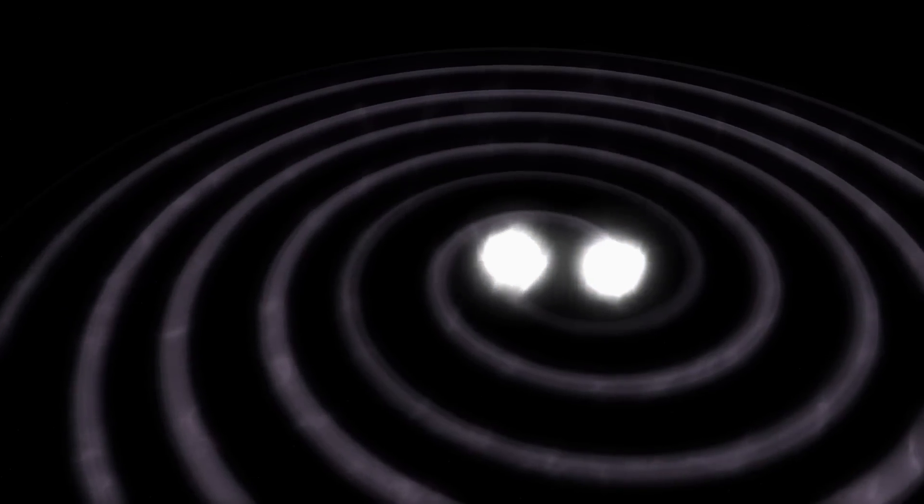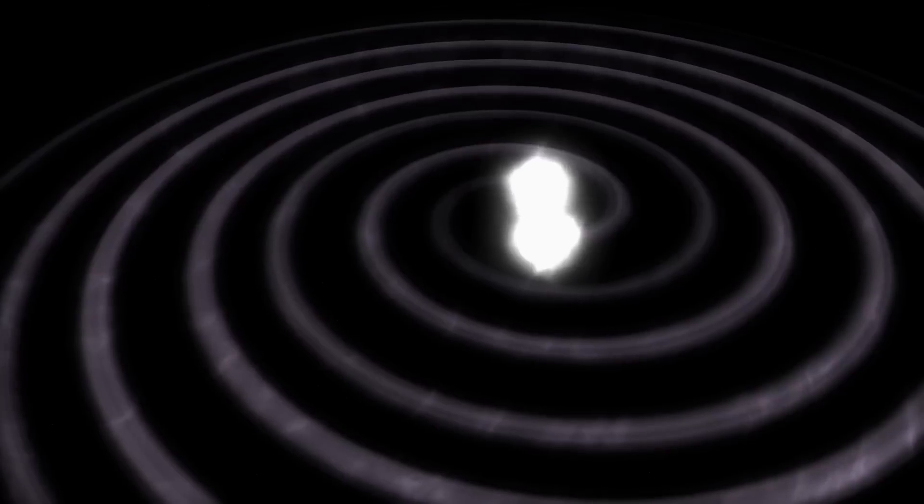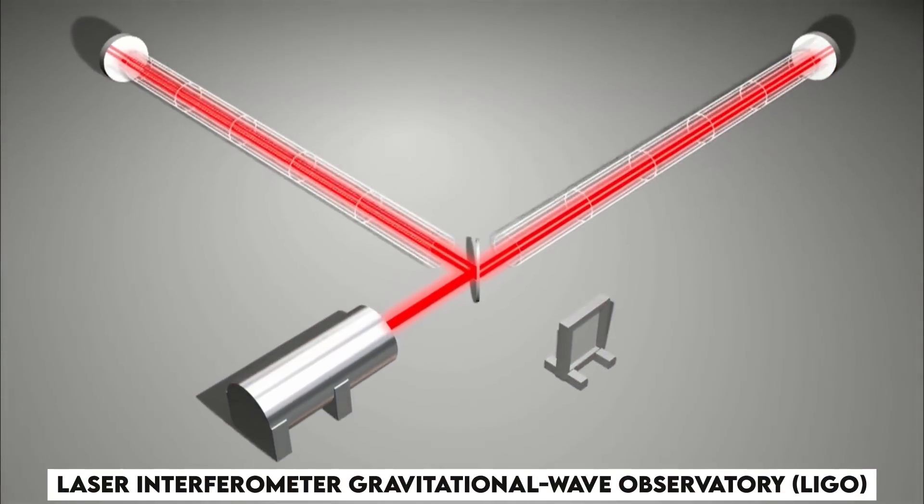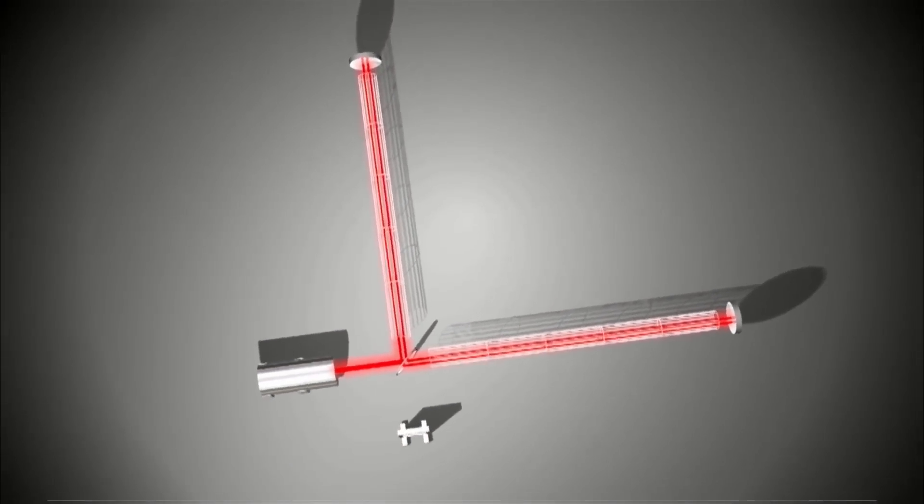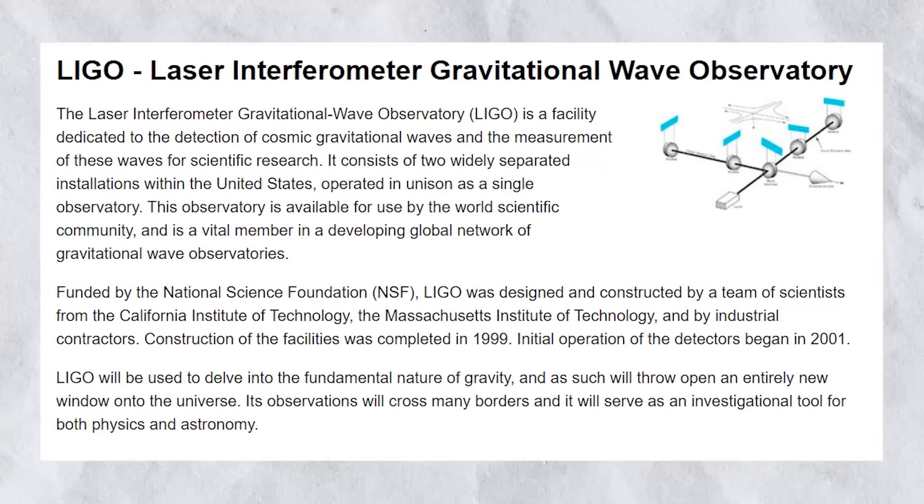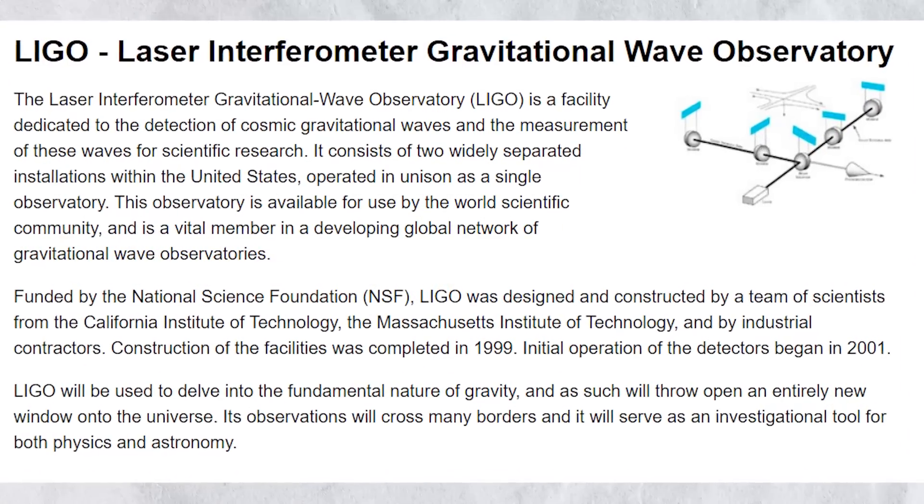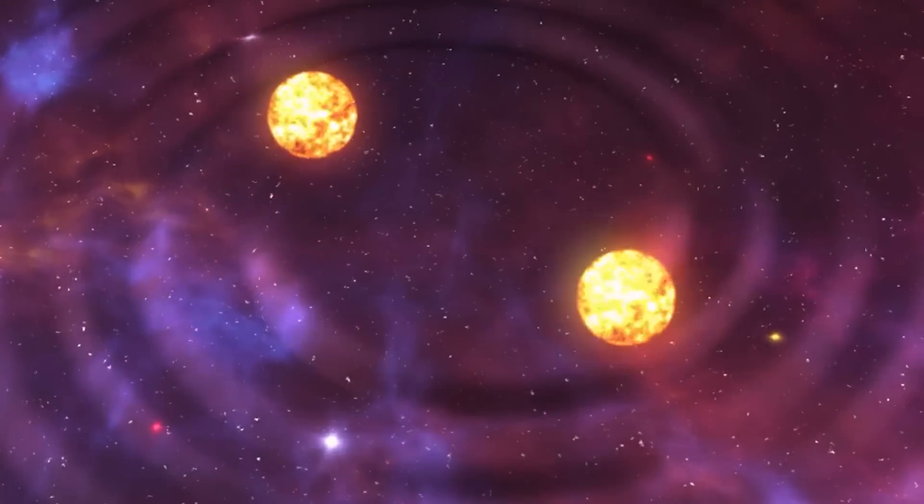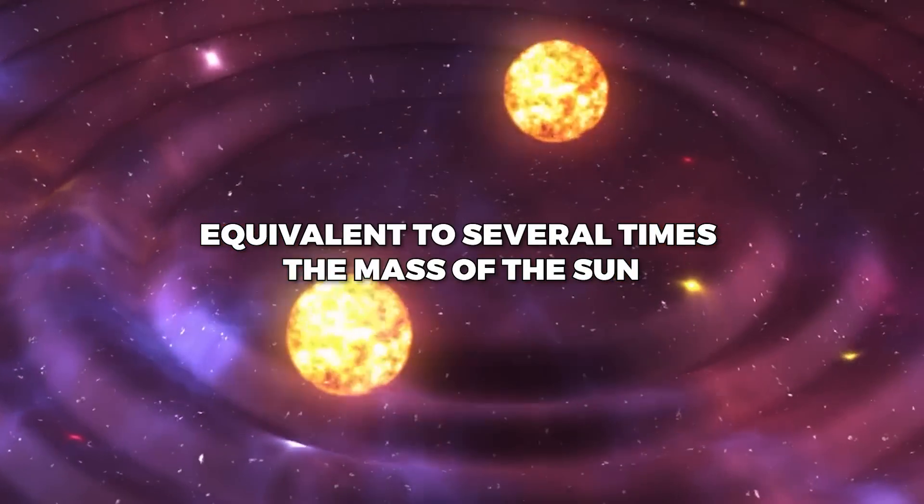When the two black holes get close enough, they begin to merge, sending out a final burst of gravitational waves that can be detected by sensitive instruments, such as the Laser Interferometer Gravitational Wave Observatory, LIGO. It is a ground-based observatory that was designed to detect and study gravitational waves by the motion of massive objects, like black holes and neutron stars. The gravitational waves produced by such a merger are some of the strongest and most dramatic events in the Universe, equivalent to several times the mass of the Sun.